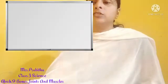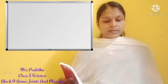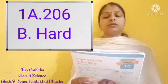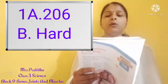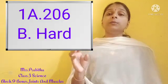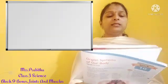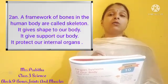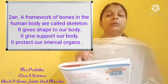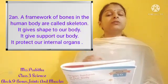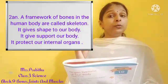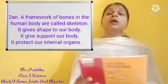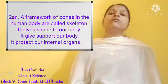Now everybody take your textbook — we have to write two practice questions also. First one, fill in the blanks: there are blank bones in our body — 206 bones in our body. Second one: bones are the blank parts of our body — bones are the hard part of our body. Second question: what is the skeleton and what are its functions? The framework of bones is called skeleton. Its functions are: it gives shape to our body, it gives support to our body, it protects our internal organs, it helps us to move, and it helps with blood production. Write any three functions for the exam.